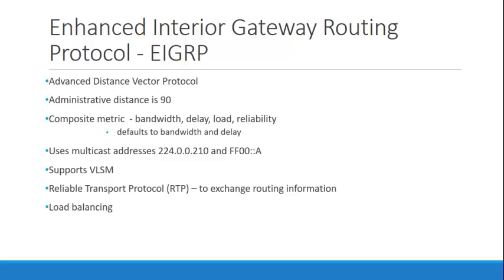EIGRP uses multicast address 224.0.0.210 for IPv4 to exchange routing information, and FF02::A to exchange routing information in IPv6. It supports variable length subnet masking, and rather than using UDP or TCP, it uses Reliable Transport Protocol, or RTP, to exchange its routing information.